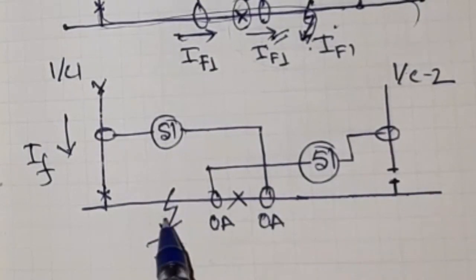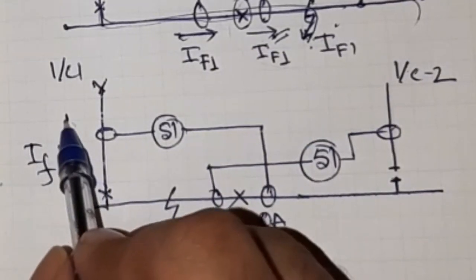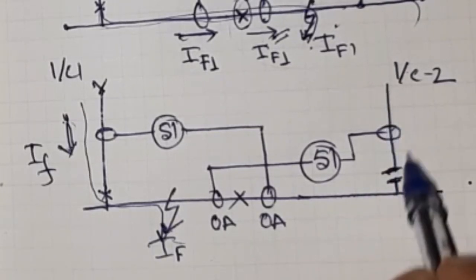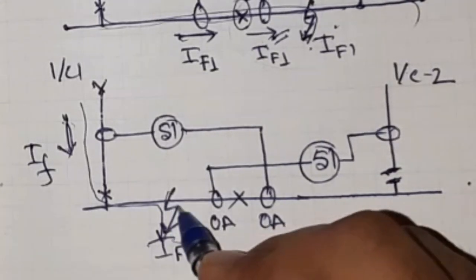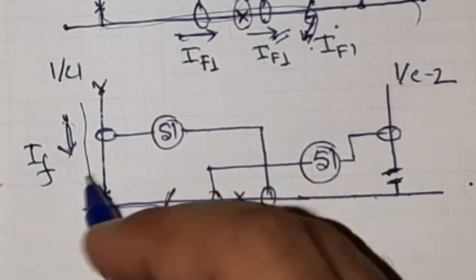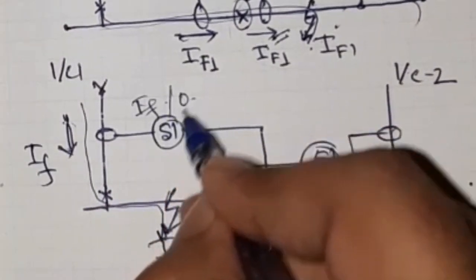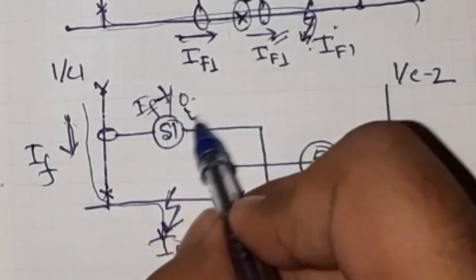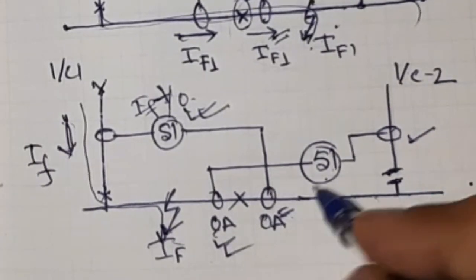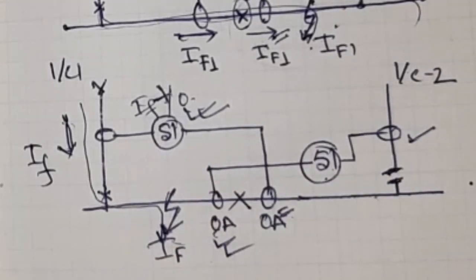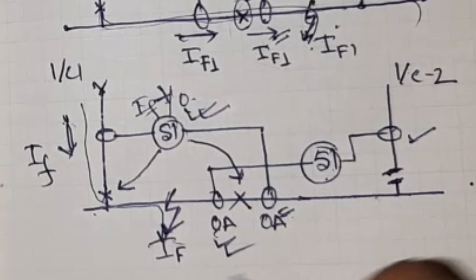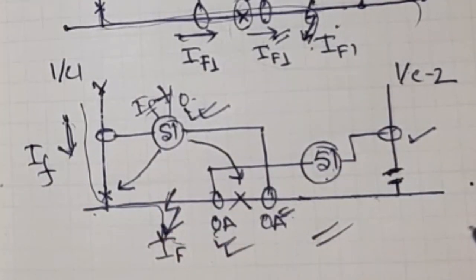Now let us check another condition: the fault is on Bus Section A with Incomer 2 open. The fault current comes through Incomer 1 and flows through this path with no current coming through Incomer 2. Since the fault has occurred here, the bus coupler CT sees zero current, and if there is no motor load the Incomer 2 side CT also sees zero current. These two CTs are additively connected, so the Zone 1 relay picks up, while Zone 2 relay does not pick up because there is no current through Incomer 2 or the bus coupler CT on that side. Zone 1 sends a trip signal to Incomer 1 and the bus coupler. Both trip and the faulty bus section is isolated. In this case the entire switchboard is switched off.